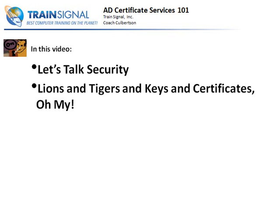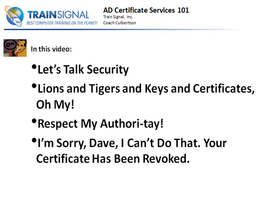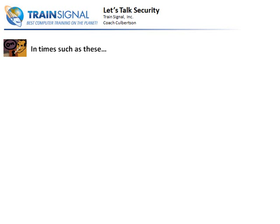Then we're going to talk about Keys and Certificates — Lions and Tigers and Keys and Certificates, oh my. Okay, we're not really going to talk about Lions and Tigers, but I thought it was a fun title. We're going to talk about Keys and Certificates and wrap our heads around those. In 'Respect My Authority,' we're going to look at Certificate Authority Servers. And then we're going to say, 'I'm sorry, Dave, I can't do that — your certificate has been revoked.' We'll talk about revocation of certificates in case of security breaches and how certificates are validated. So let's start off by talking about security and what you can do with Active Directory Certificate Services.